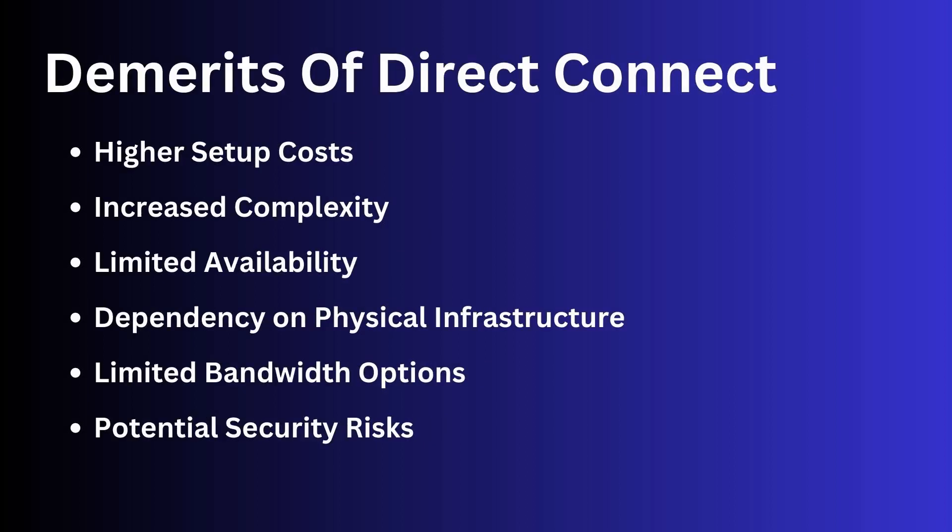While AWS Direct Connect offers many advantages, there are also some potential drawbacks to consider. Higher setup costs: setting up a Direct Connect connection requires purchasing or leasing dedicated networking equipment such as routers and switches, which can be expensive. Increased complexity: Direct Connect can add complexity to your network architecture, which can make it more difficult to manage and troubleshoot.